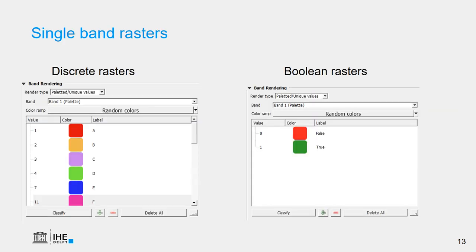If we want to visualize rasters, we also need to take into account these data types. When we talk about single-band rasters, all the values are stored in one layer, and each value represents a certain property. If the layer is a discrete raster, we use the so-called paletted or unique values and random colors.